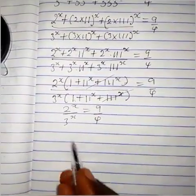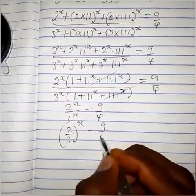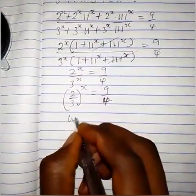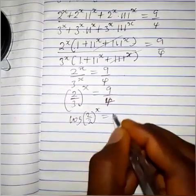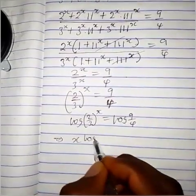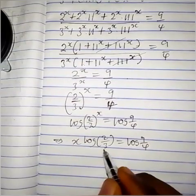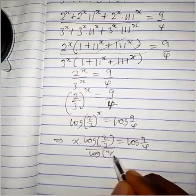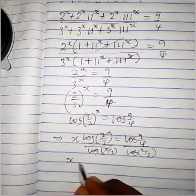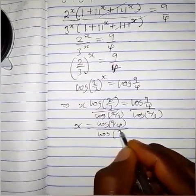From the rules of indices, this can be written as (2 over 3) raised to the power x equals 9 over 4. Now we take the natural logarithm of both sides: x times log(2 over 3) equals log(9 over 4). We divide both sides by log(2 over 3), so we are left with x equals the natural logarithm of 9 over 4, divided by the natural logarithm of 2 over 3.